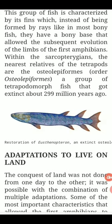This group of fish is characterized by its fins, which instead of being formed by rays like in most bony fishes, they have a bony base that allowed the subsequent evolution of the limbs of the first amphibians. Within the Sarcopterygians, the nearest relative of the tetrapods are the Osteolepiformes, a group of tetrapodomorph fish that got extinct about 299 million years ago.